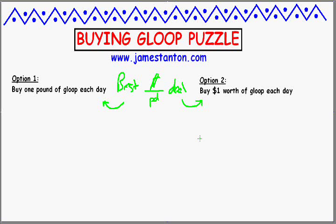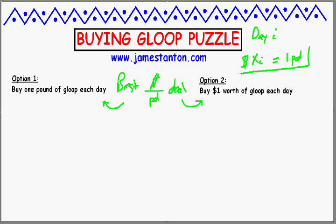I'd like to address this question. Since I've got no information about what the price is going to be from day to day, let me just give it a name. On day number i, let Xi be the number of dollars for one pound of Gloop. So on day i I expect to pay Xi dollars for that one pound of Gloop. Let's analyze each of these two options and see what the deal is in terms of dollars paid per pound.